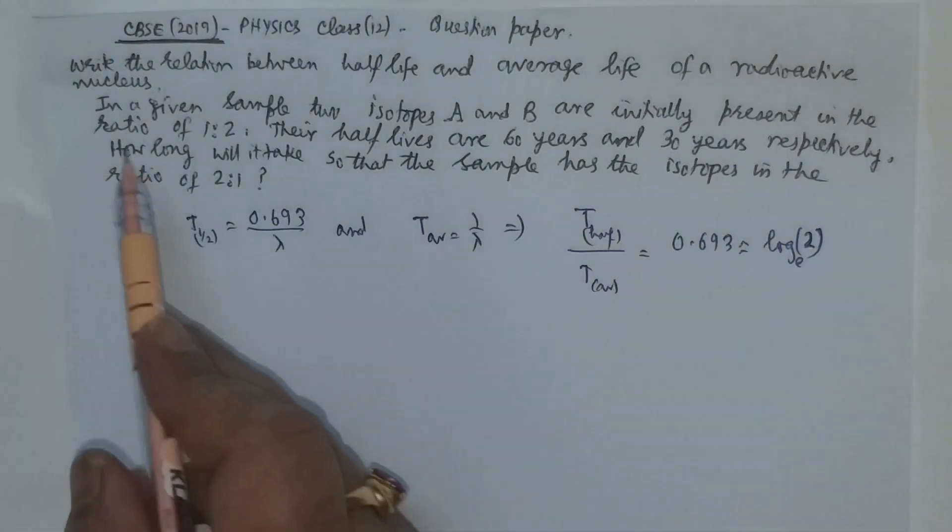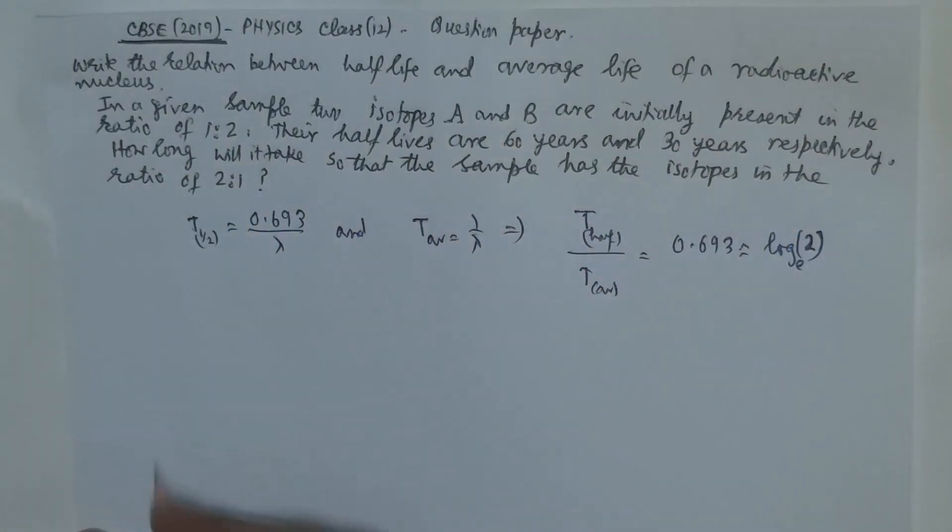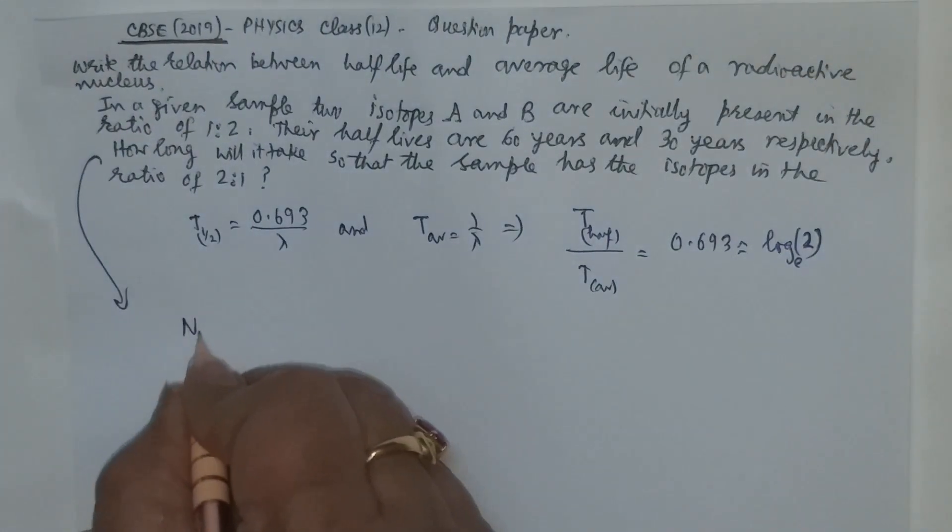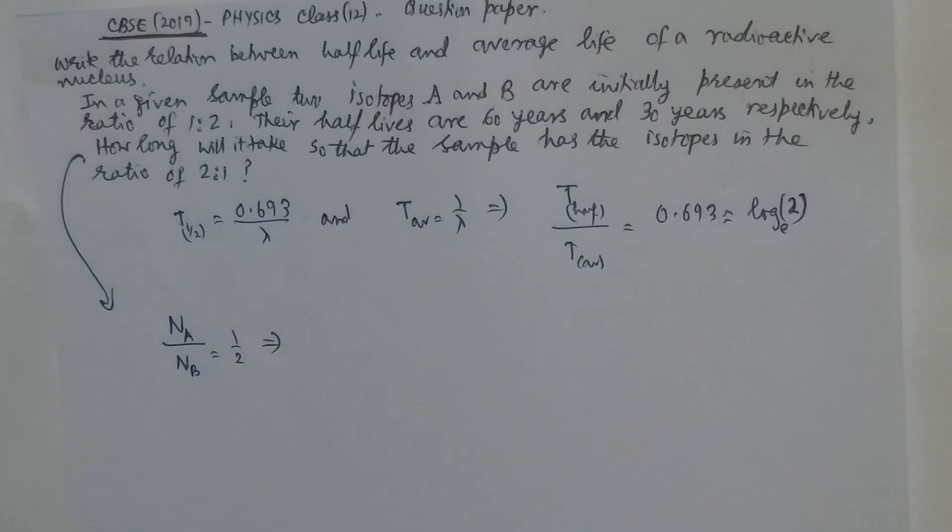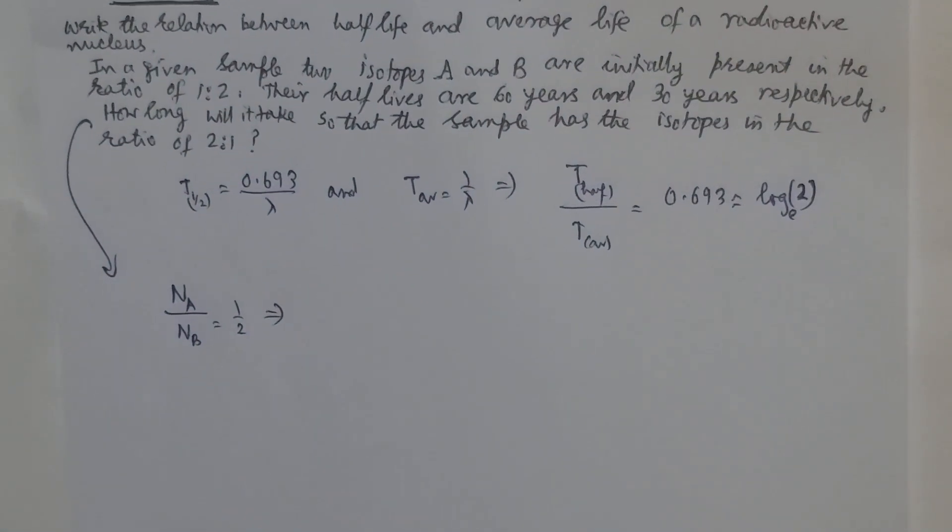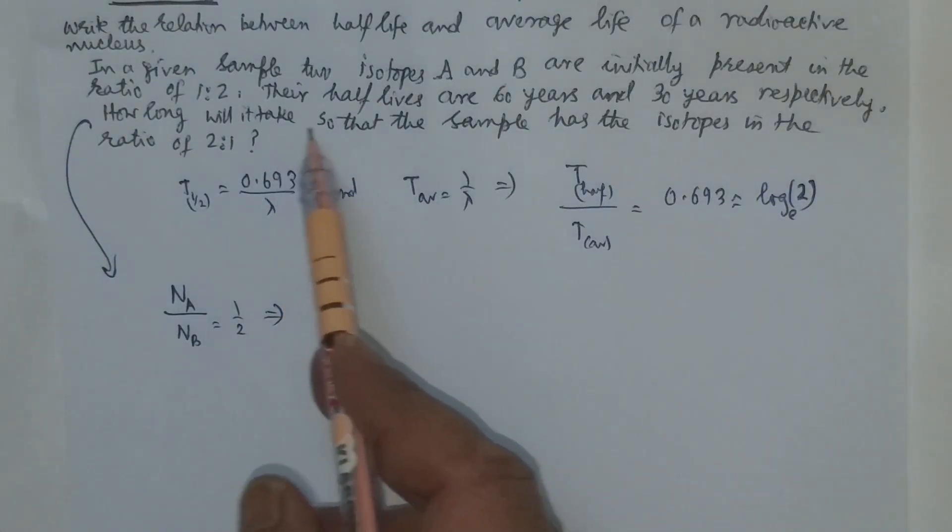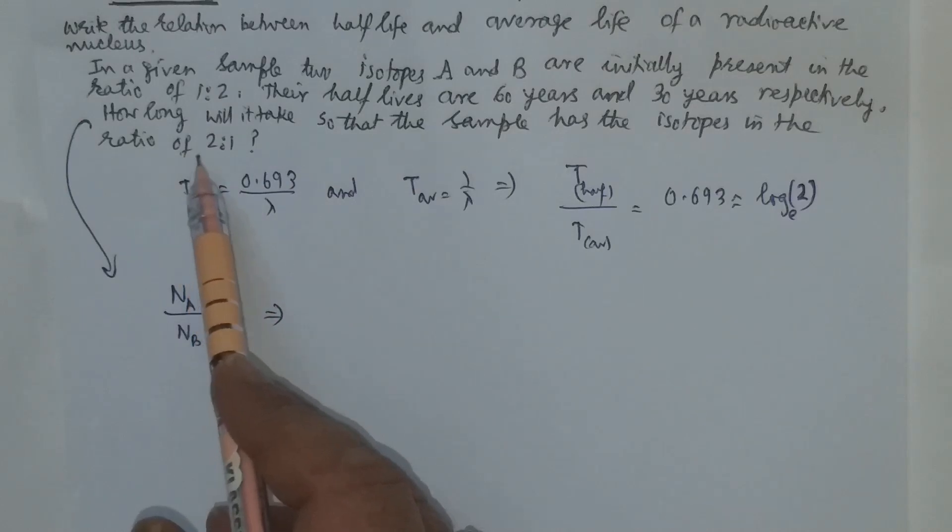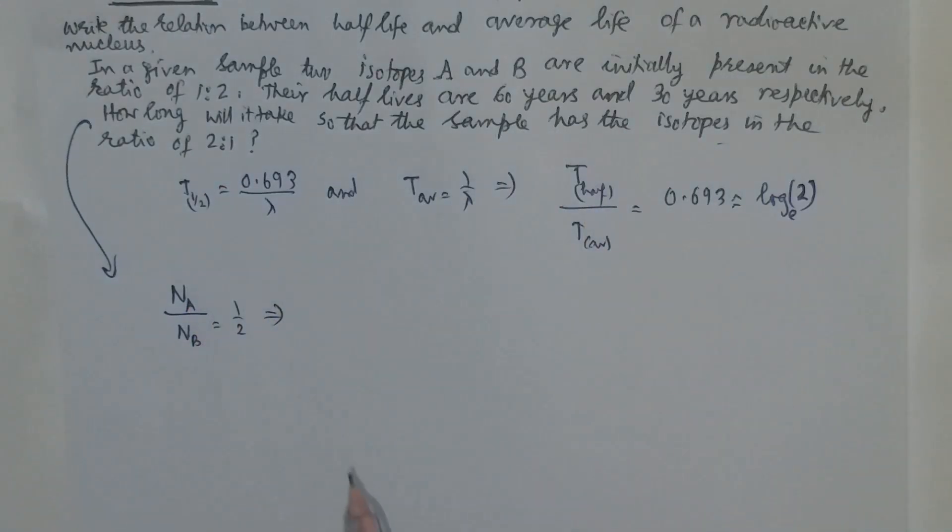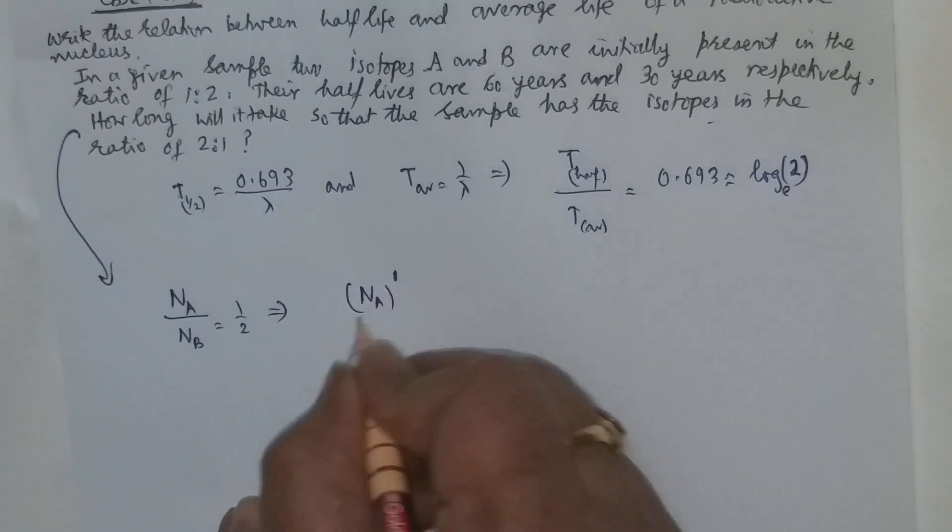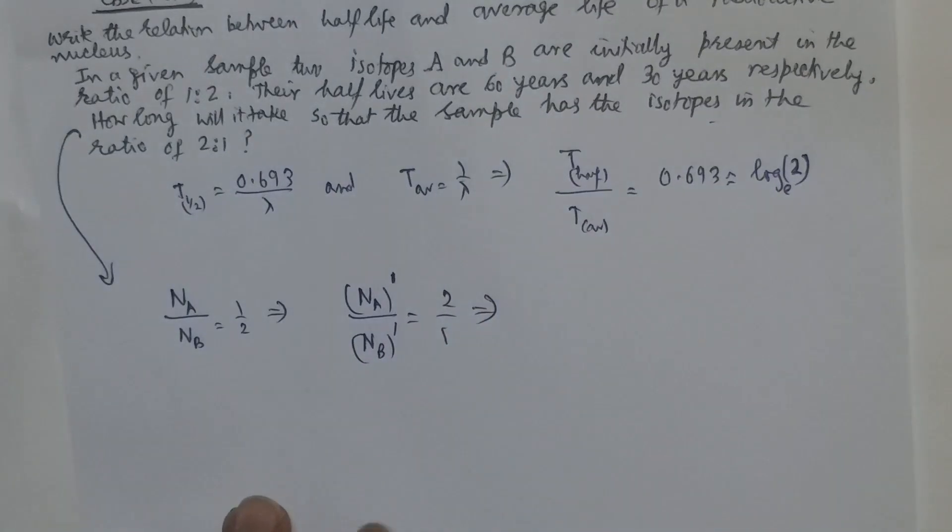In the second part, in a given sample two isotopes a and b are initially present in the ratio 1 is to 2. Due to disintegration the number of active nuclei changes. After what time will the sample have the isotopes in the ratio 2 is to 1? After some time n a dash divided by n b dash equals 2 is to 1.